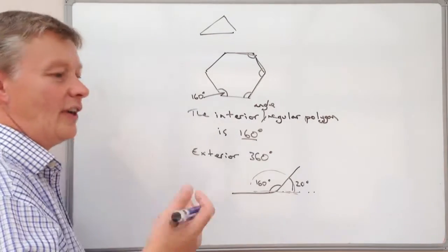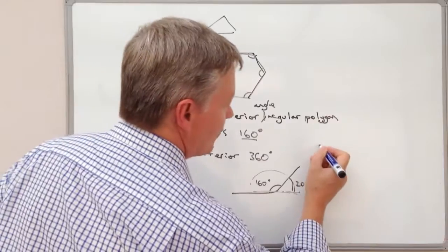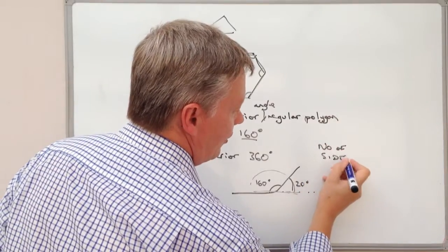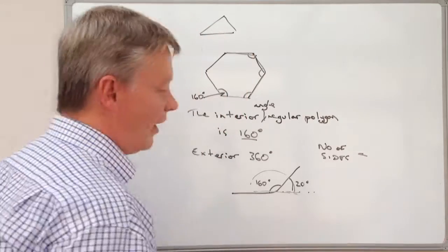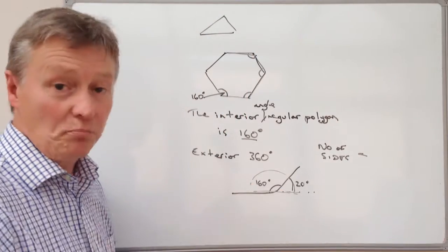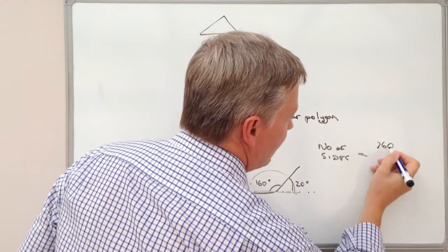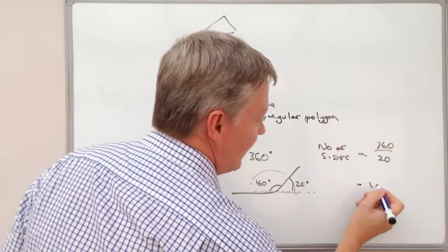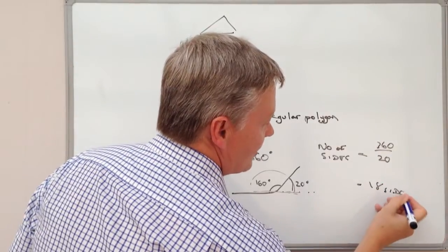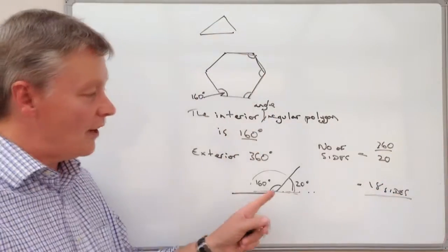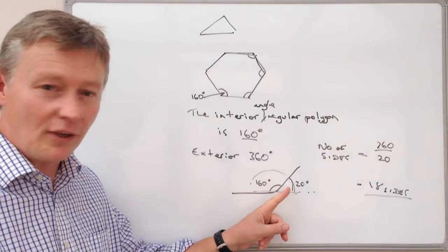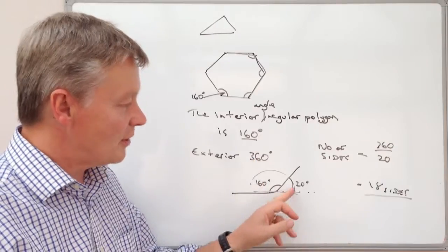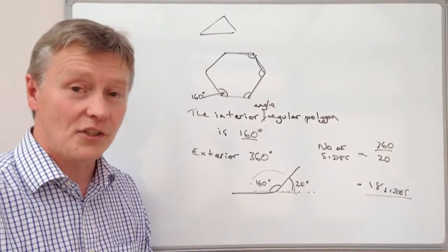So in other words to find out the number of sides, all we do is we divide 360 by 20. So 360 divided by 20 and that will give us 18 sides. So the answer to this question because we know that the exterior angles of a polygon add up to 360 degrees, if we divide 360 by 20 we'll get 18 sides.